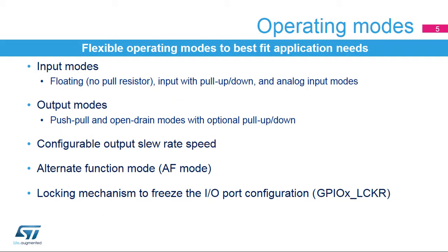General-purpose I/O pins can be configured for use in several operating modes. An I/O pin can be configured in input mode with floating input, input mode with an internal pull-up or pull-down resistor, or as an analog input. It can also be configured in output mode with a push-pull output, or an open-drain output with an internal pull-up or pull-down resistor. For each I/O pin, the slew rate speed can be selected from four ranges for the best compromise between maximum speed and EMI emissions.